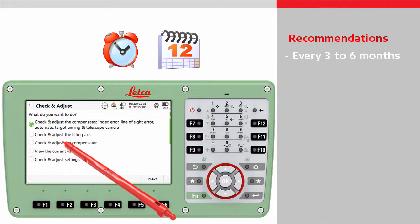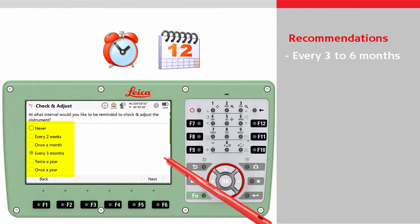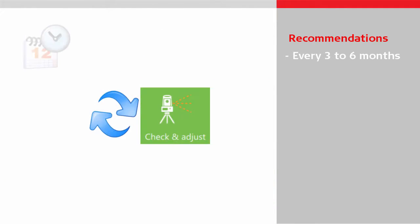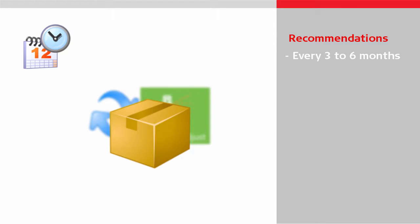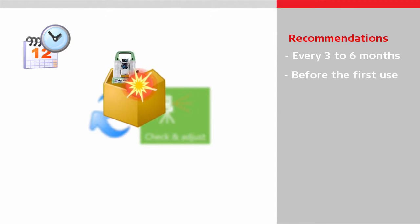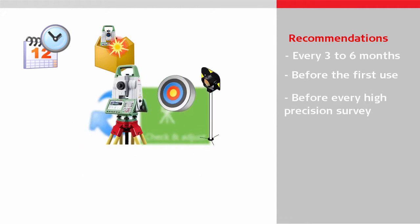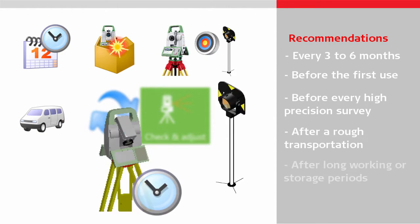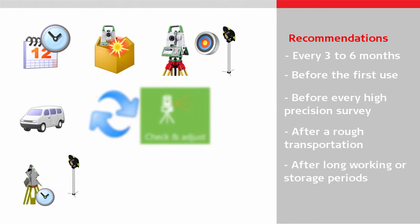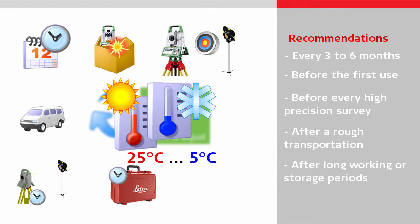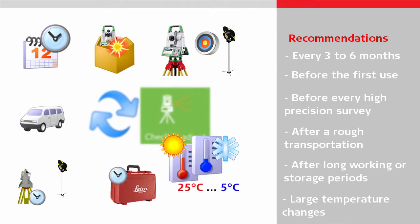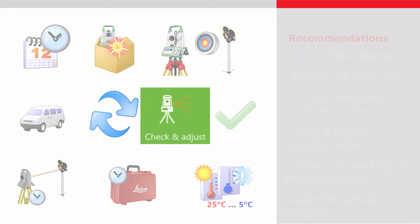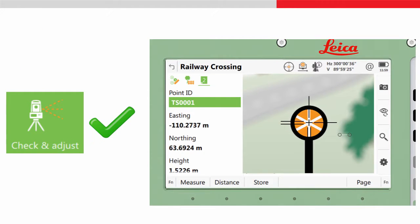A reminder can be set within the check and adjust tool to inform the user in this regard. In addition, the calibration routines should be executed before the first use, before every high precision survey, after rough or long transportation, after long working periods, after long storage periods, and if the temperature difference between the current environment and the temperature at the last calibration is more than 20 degrees Celsius. A proper calibration of the instrument enables the highest precision and reliability of your measurement tasks.